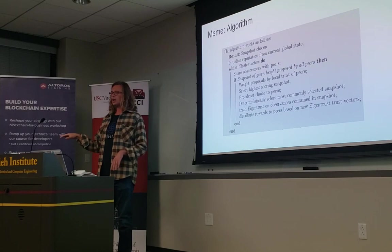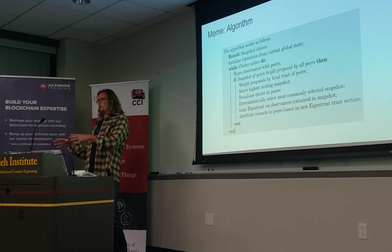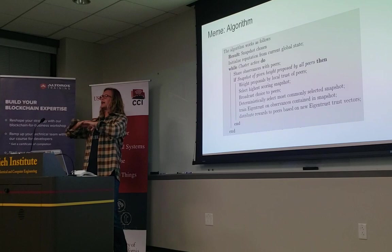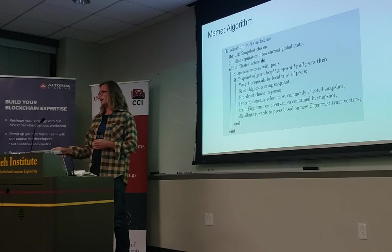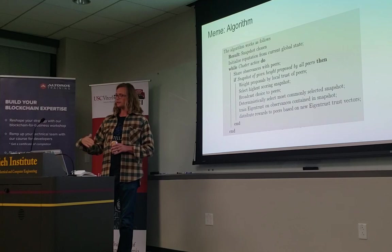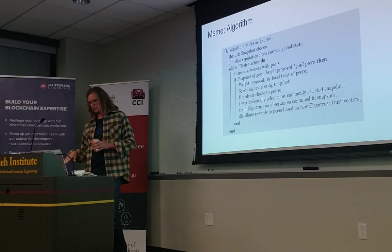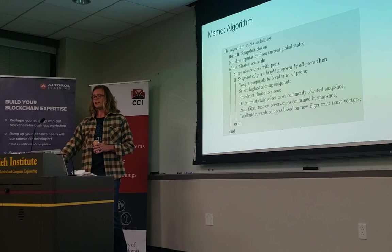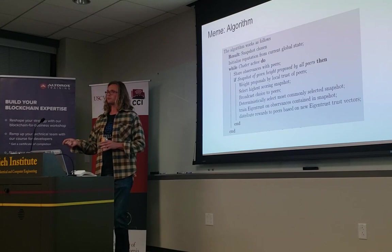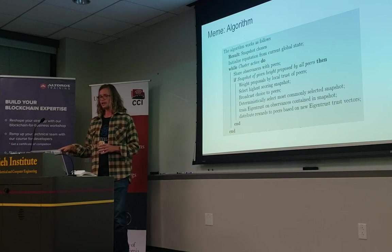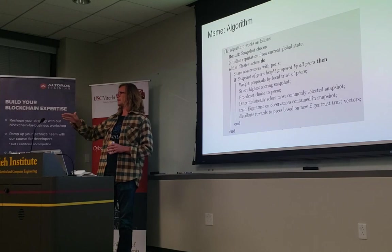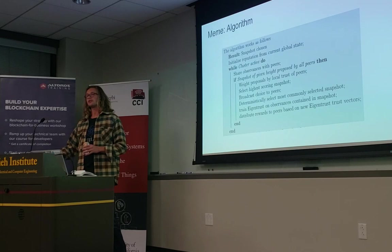Once we've reached our snapshot — which is what we call our global state — that has a height to it beyond a certain configurable threshold to ensure convergence happens at an appropriate time, we weight all proposals from peers by our local score. We then propose the highest-scoring one to all peers through a broadcast, deterministically select one of those, and take the results to retrain EigenTrust — which gives us deterministic outputs for validated rewards. That EigenTrust state becomes the new base state that every node makes its local decisions from, then we start adding new observations and update that local state.